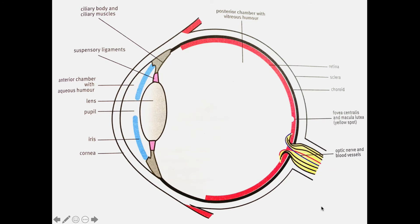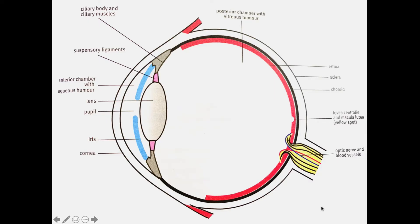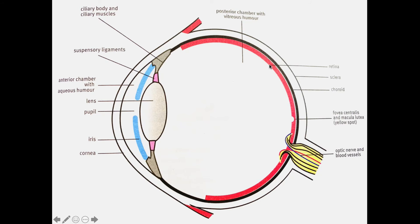Let's take a look at the internal structure of the eye. Internally, we find many structures that all work together to ensure the correct functioning of our eye. The eye has different layers: an outermost layer, a middle layer, and an innermost layer. The outer layer is called the sclera, the middle layer is the choroid, and the innermost layer is the retina. Let's discuss them in that particular order.